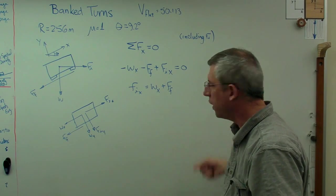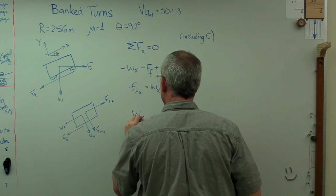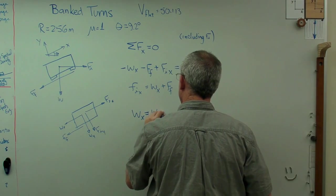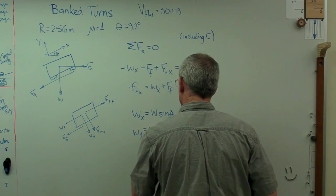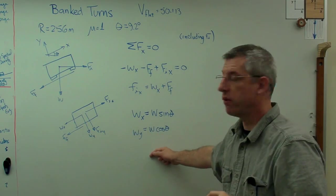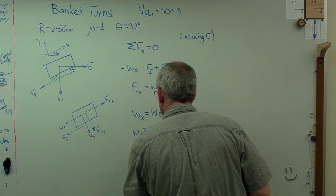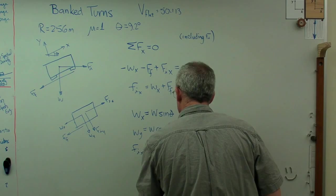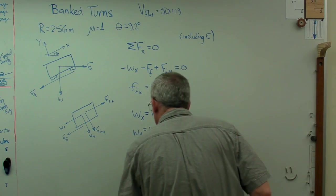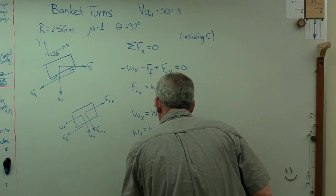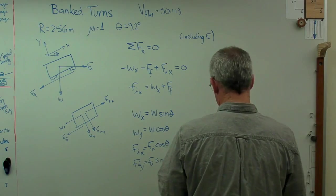Minus w_x minus the friction force plus f_i sub x equals zero. Or f_i sub x equals w_x plus friction force. That just says that the forces on that side equal the forces on that side. Now it's just bookkeeping, we're going to need to fill in all those terms. W_x is w sine theta, w_y is w cosine theta, f_i in the x direction is f_i cosine theta, and that's going to be f_i sine theta.